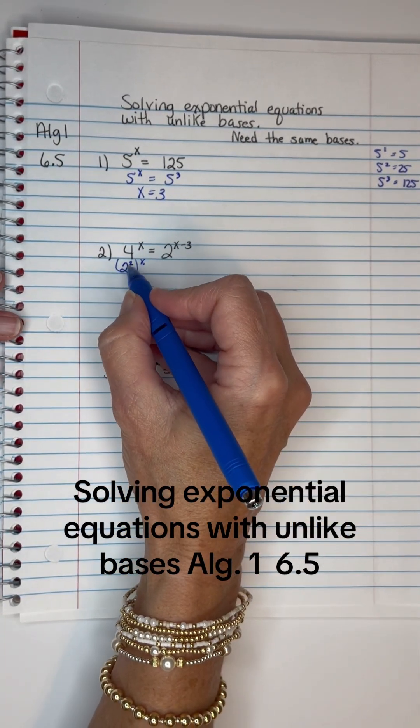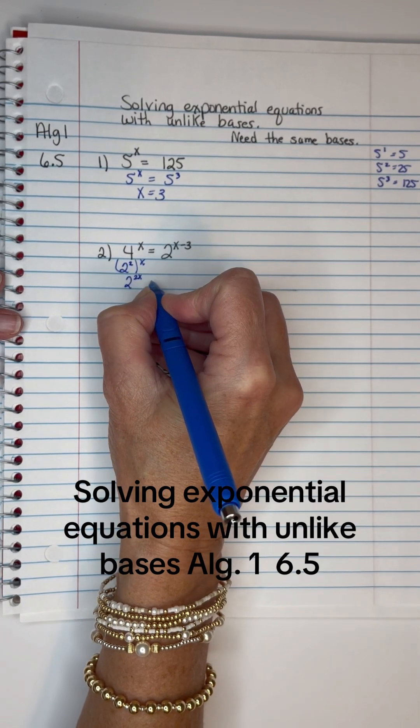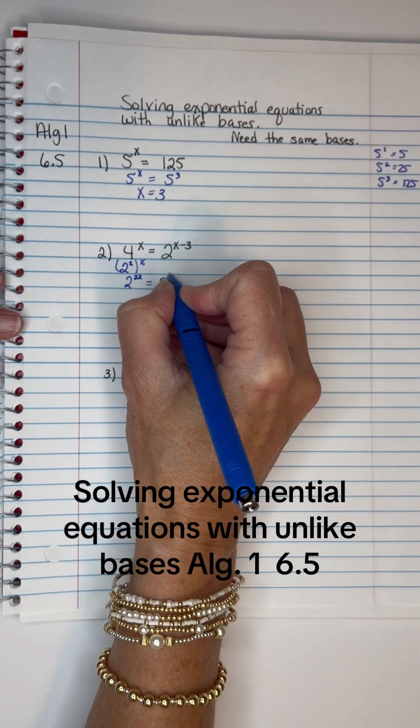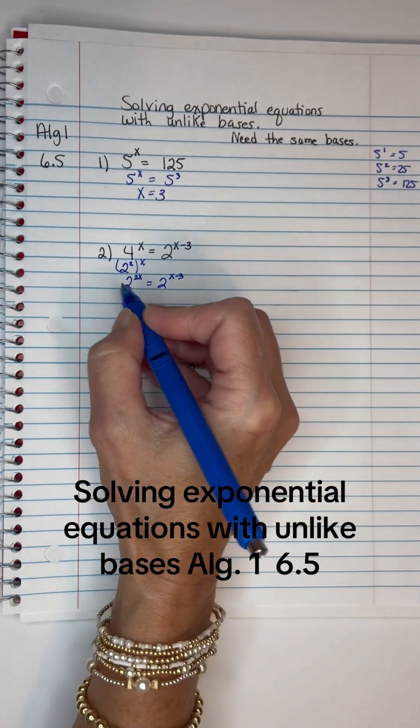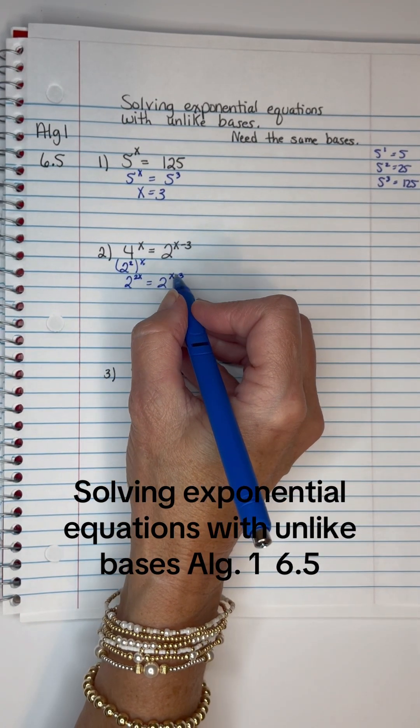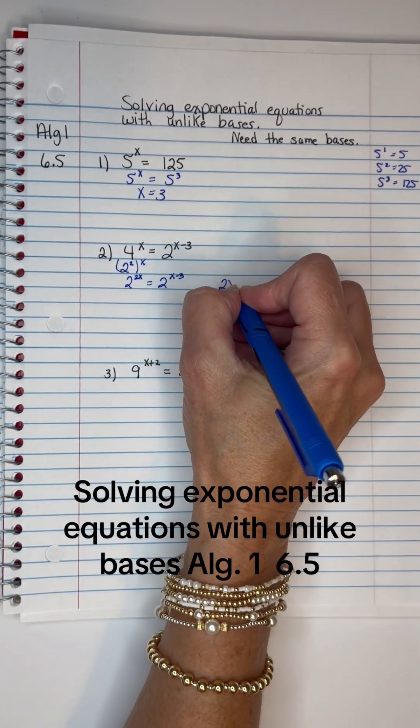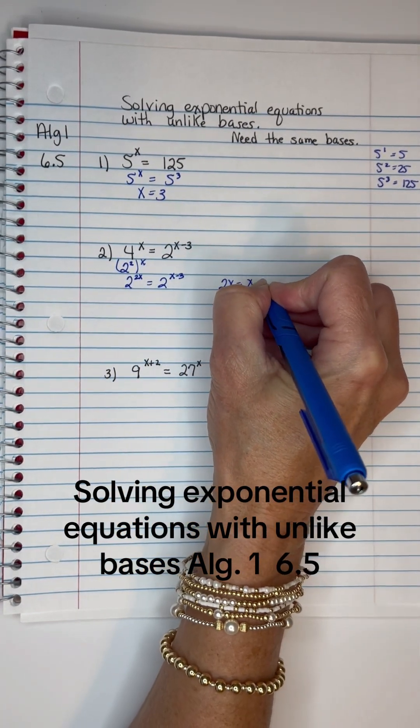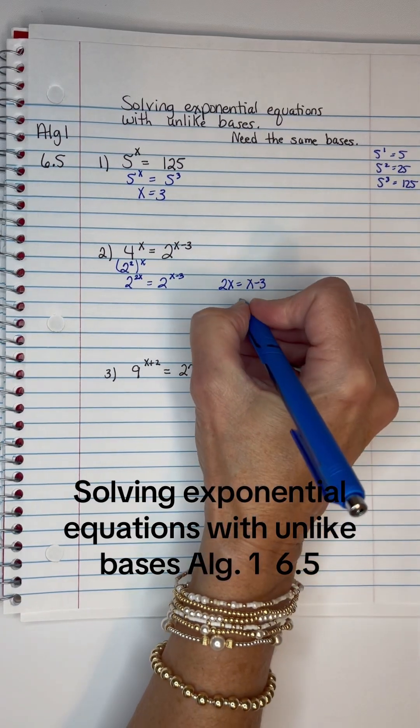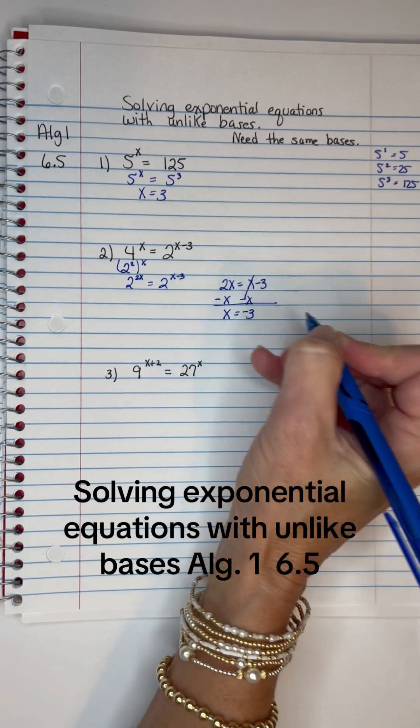And literally, when you have a power raised to a power, you multiply it. So it's 2 raised to the 2X equals 2 raised to the X minus 3. Since the bases are the same, now I can say 2X equals X minus 3. And then subtract X from both sides. I have X equals negative 3.